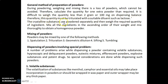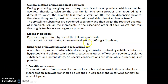Crystalline substances are powdered separately, then weigh the required quantity of ingredients. Mix all ingredients in ascending order of their weight and mix thoroughly to obtain a homogeneous powder. Powders may be mixed by one of the following methods: spatulation, trituration, geometric dilution, sifting, and tumbling.